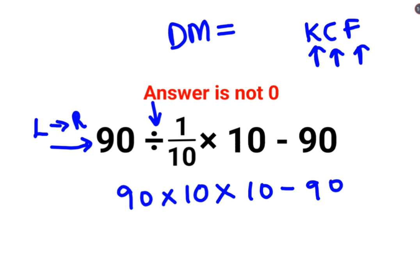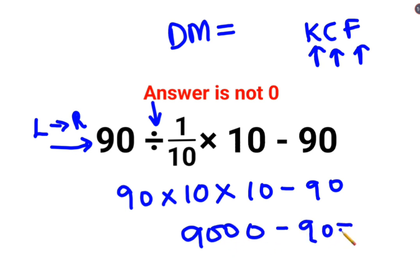So we have 9 × 10 = 90, and 90 × 10 = 900, and 900 × 10 = 9000. Then 9000 minus 90 gives us the answer for this question, which is 8910.